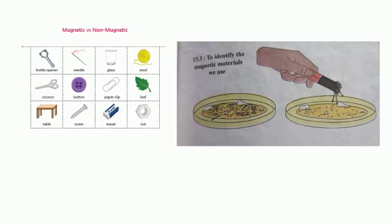The materials that stick to a magnet are called magnetic materials. Examples include iron filings, pins, needles, bottle openers, screws, and scissors. Those objects that do not stick to a magnet are called non-magnetic materials — for example, sand, pieces of paper, and sawdust. The metals iron, cobalt, and nickel are magnetic materials.